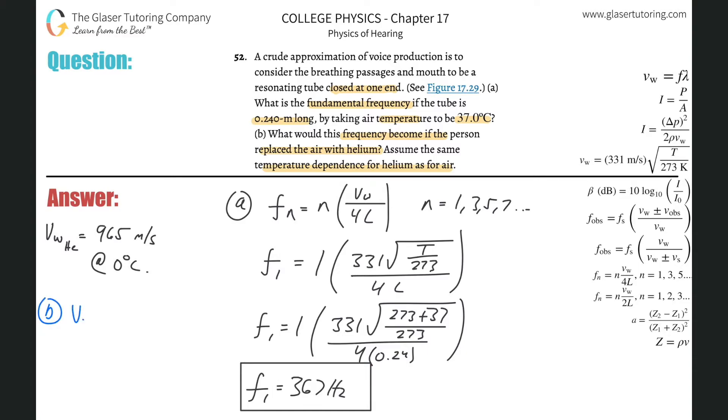So the formula VW equals VW at 0 degrees Celsius, multiplied by the square root of the Kelvin temperature, divided by 273. Now the reason why we have 331 in that formula is because the velocity of sound in air at 0 degrees Celsius is 331. But that formula really has the generic form that I just wrote. So now if I want to find it for helium, I have to look it up in the table in the text. At the beginning of this chapter, the velocity of sound in helium at 0 degrees Celsius is 965. And they told us to assume the same temperature dependence, meaning the square root of the Kelvin temperature over 273.